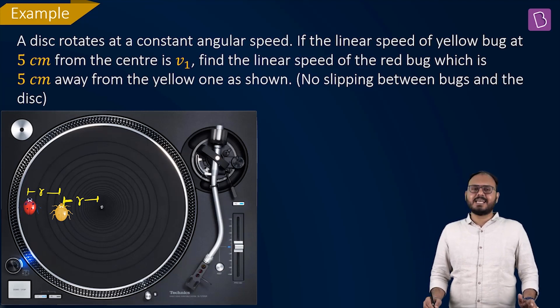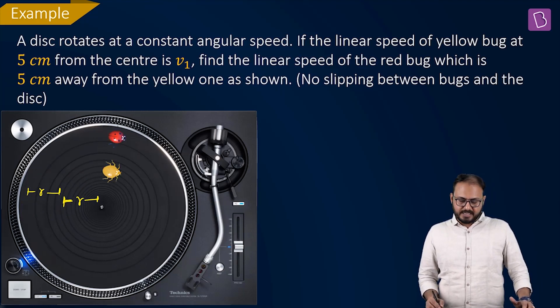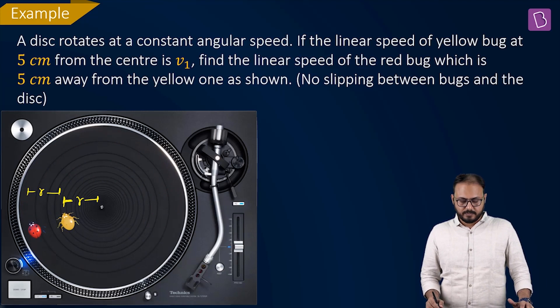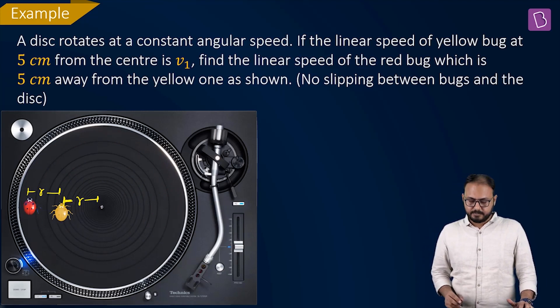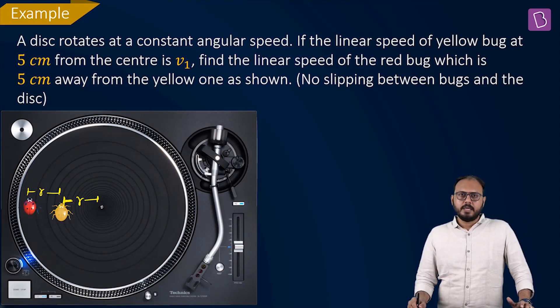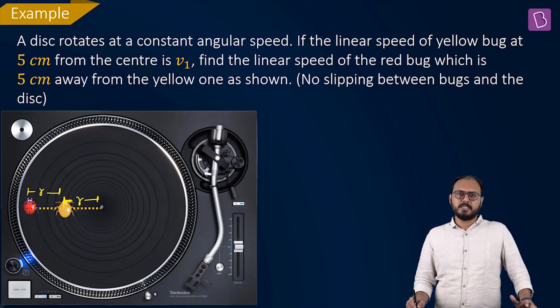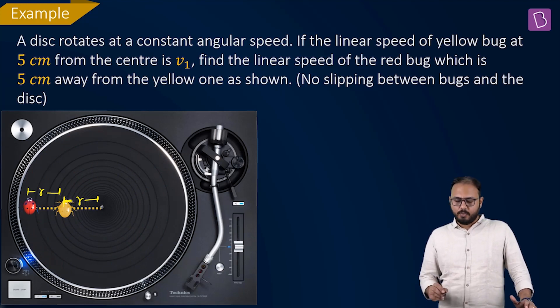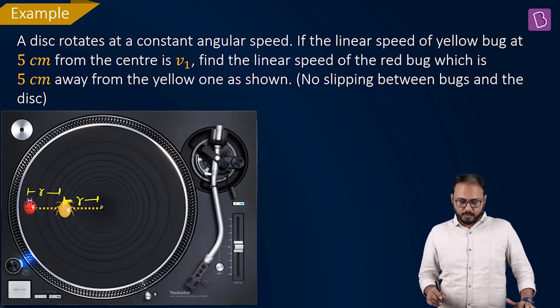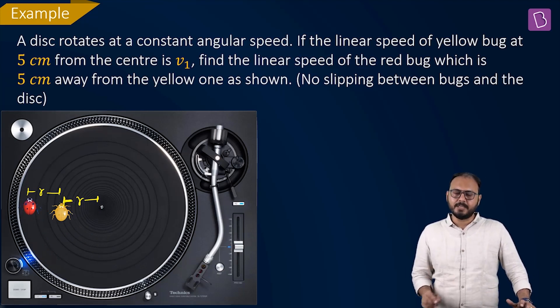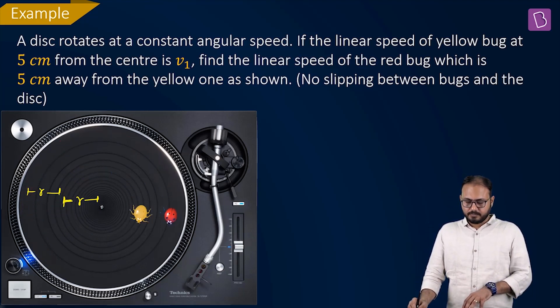No slipping between bugs and the disc, what does that mean? If the disc rotates, the bug rotates. And the disc rotates with constant angular velocity. Now I want you to understand something. Watch it again. Is the question clear?